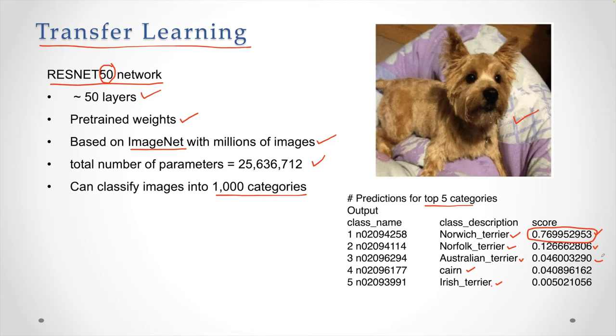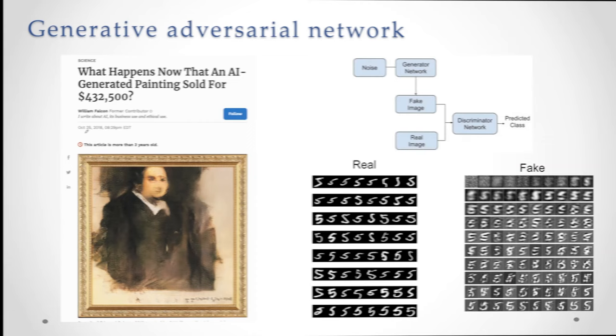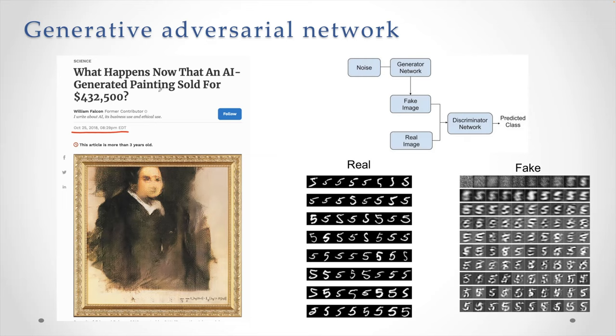There are many such networks already pre-trained. And companies like Nvidia, for example, they are leading examples of creating a lot of pre-trained models. So this is an article published in 2018. There was a painting that was sold for almost half a million dollars. The unique thing about this was that this painting was done by artificial intelligence. Deep learning network used was this GAN network. So this is the picture that was bought for half a million. I created a small example using GAN.